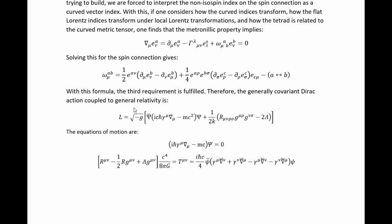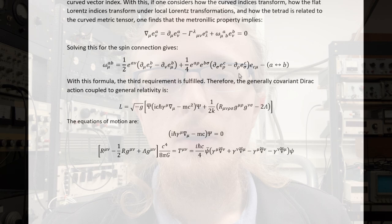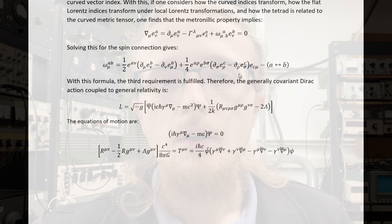Therefore, the generally covariant Dirac action coupled to general relativity is given by this Lagrangian density — with the gauge covariant derivative as defined above and the spin connection expressed in terms of the tetrad. So now you've seen all the mathematical and technical details of sticking spinors into general relativity. You've seen exactly what it means to stick spinors in the local Lorentz frame, and you've seen exactly what technical details are involved. I hope this helped you understand general relativity and field theory, and possibly applications in quantum gravity, a little better. If it did, please give it a thumbs up, and don't forget to subscribe.